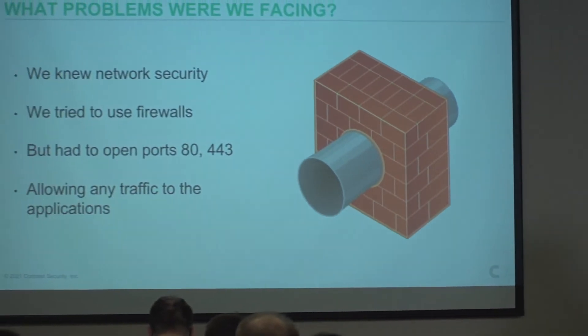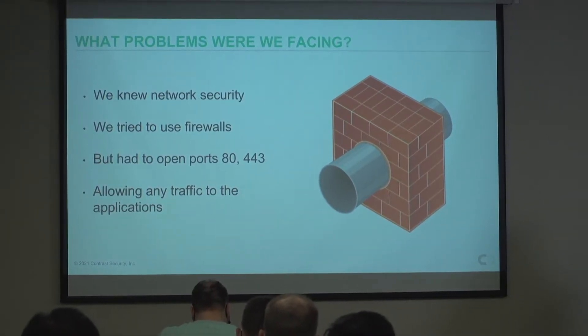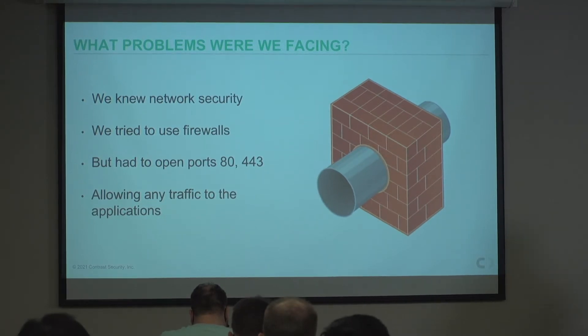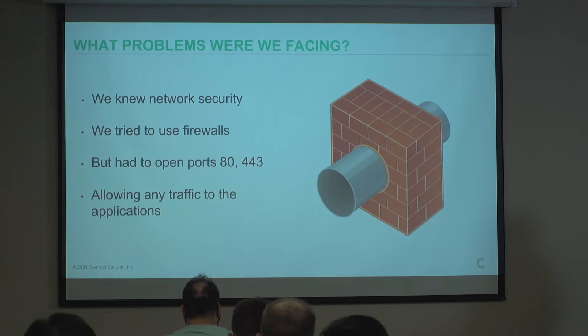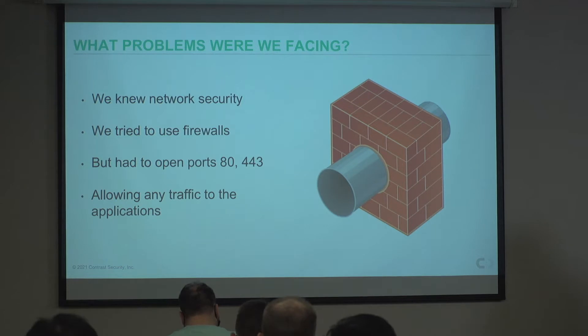A WAF — a web application firewall — came to light around 2002. At that point we were getting really good at firewalls, blocking different TCP and UDP ports. But then we started building websites and told the network people 'open port 443 and port 80 — it'll be fine.' Now we had these big gaping holes, and we couldn't really see into the traffic. So we asked: what do we do about that?